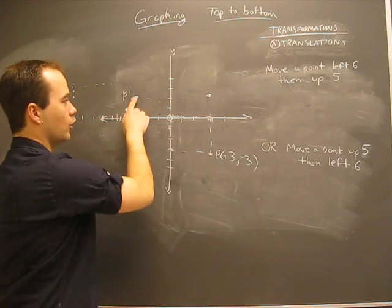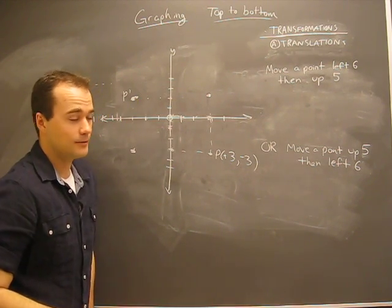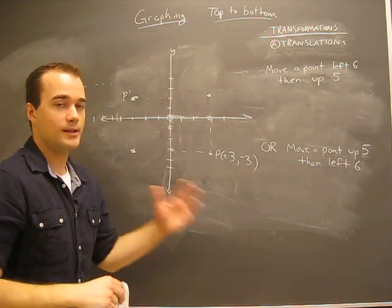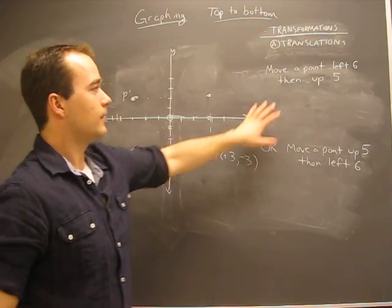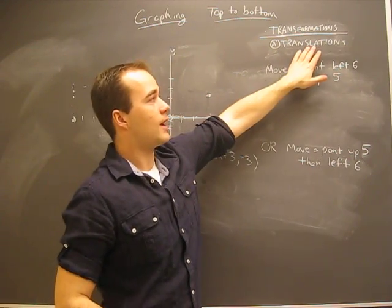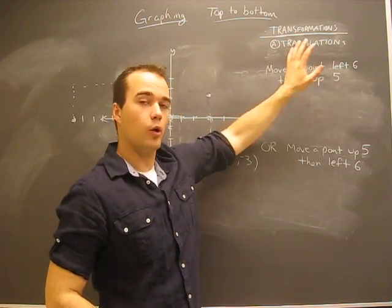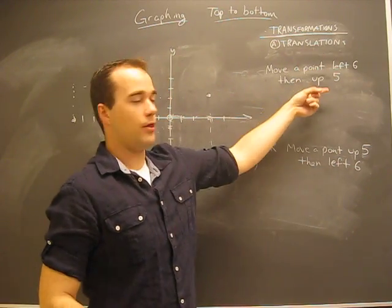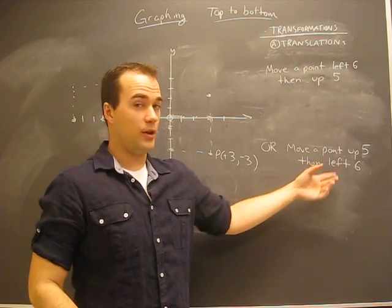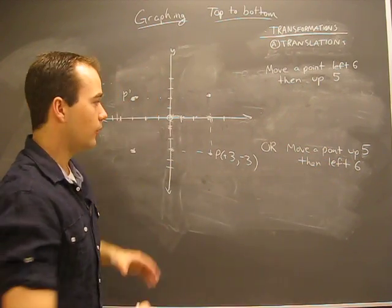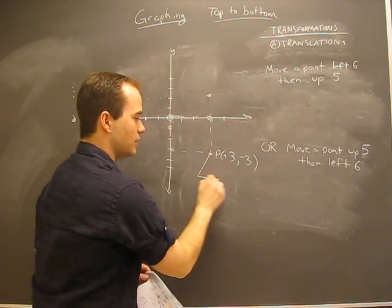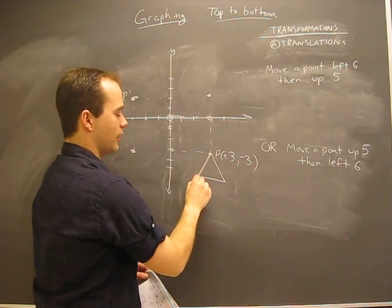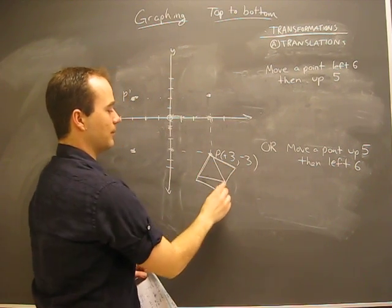More than just a coincidence, we end up at the same spot. So what this tells us is that it doesn't matter if we combine translations, it doesn't matter what order we do them in. We move this point left and then up, or we can move it up and then left, we'll end up at the same point. It's the same thing as if this was a triangle or diamond shape or whatever.